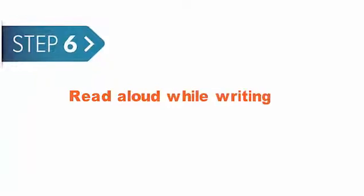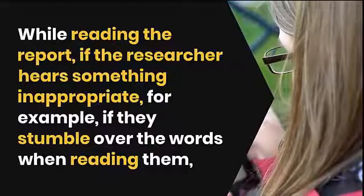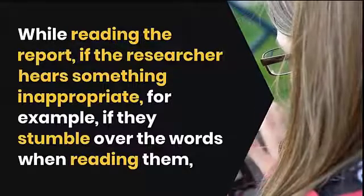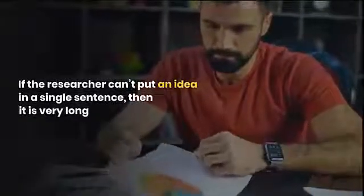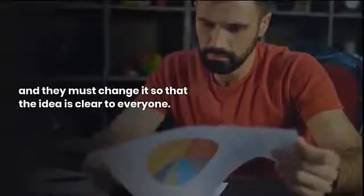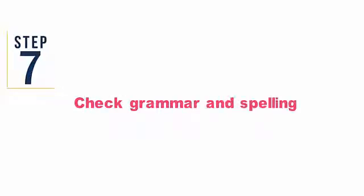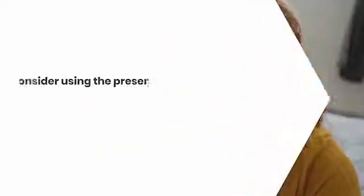Tip 6: Read aloud while writing. If the researcher hears something inappropriate — for example, if they stumble over words when reading them — surely the reader will too. If the researcher can't put an idea in a single sentence, then it is too long and they must change it so the idea is clear to everyone. Tip 7: Check Grammar and Spelling. Good practices help to understand the report. Use verbs in the present tense, which makes the results sound more immediate. Find new words and other ways of saying things.